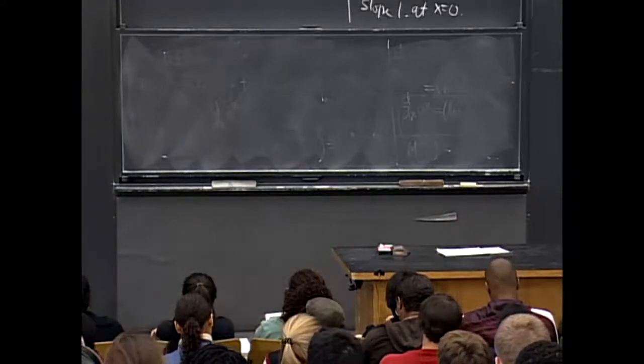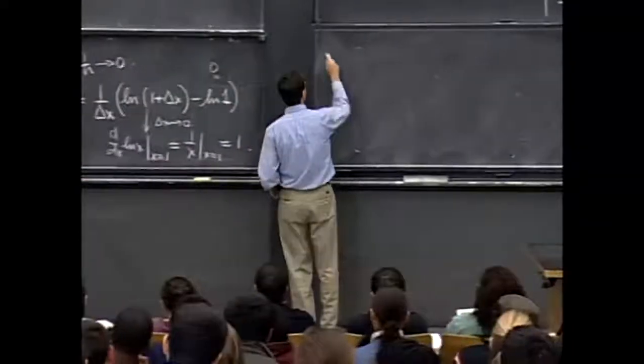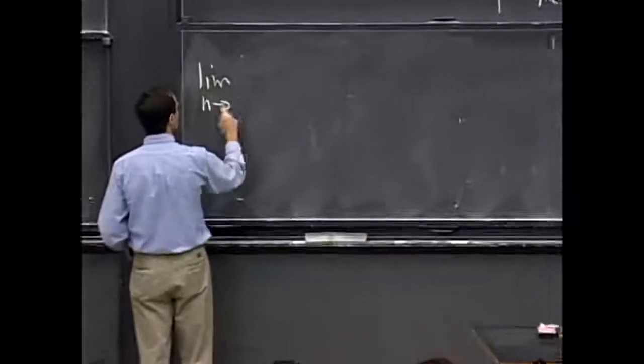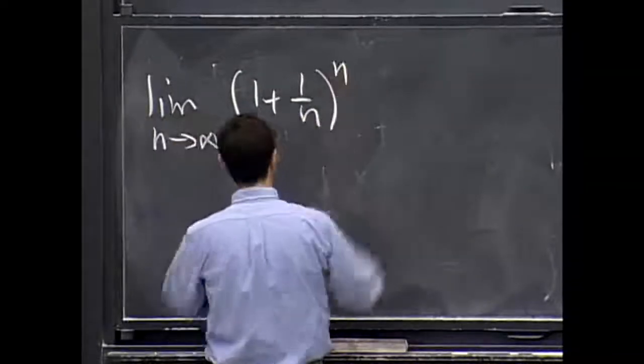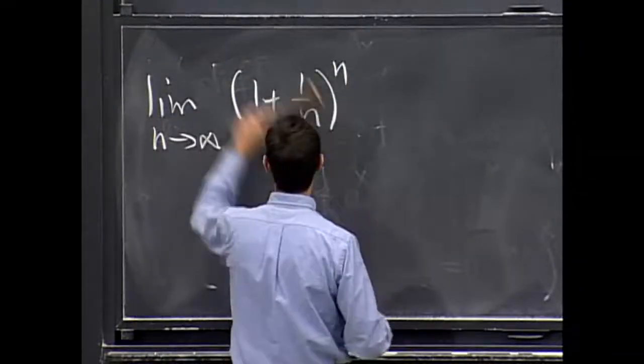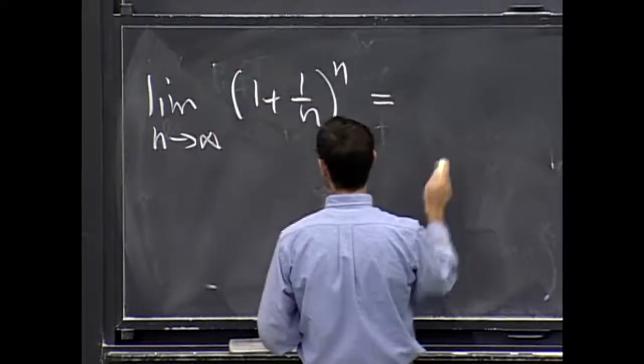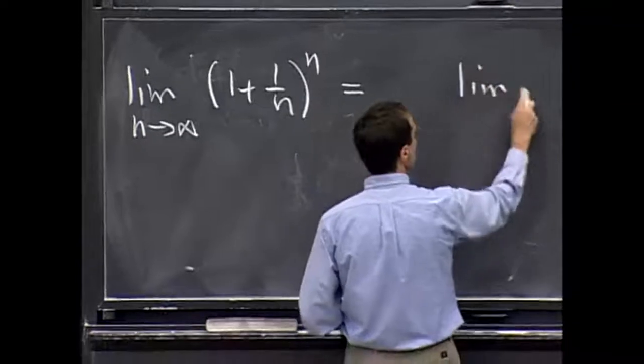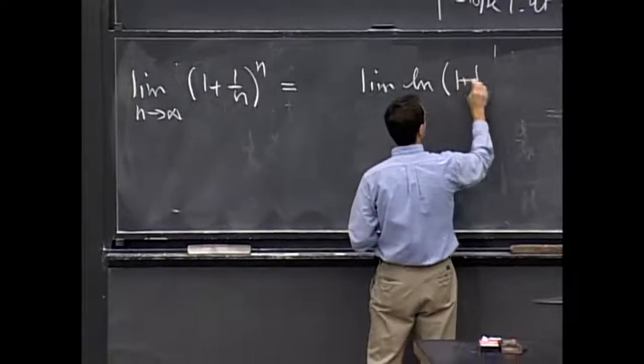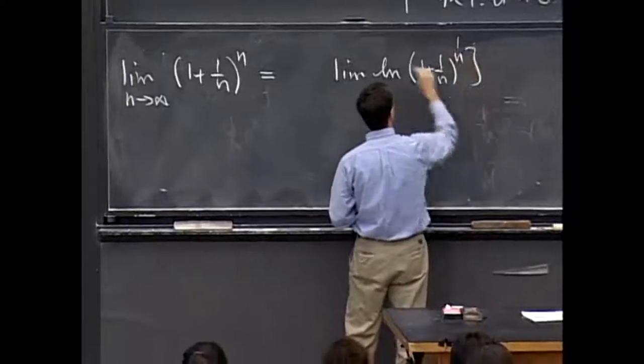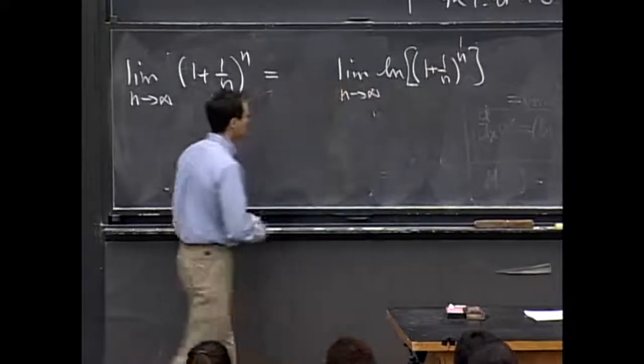So let's see here. The log approached 1. So the limit, as n goes to infinity, of 1 plus 1 over n to the n, so the log of this, right, 1 plus 1 over n to the n, n goes to infinity. That's the one that we just figured out.